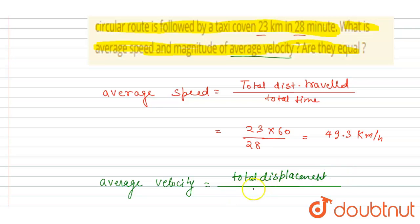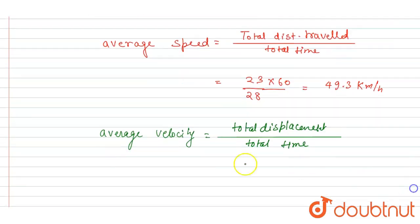Total time taken is the same 28 minutes. Total displacement here is 10, so I will write 10 by 28 into 60 to convert it into hours. This will be 21.4 kilometer per hour.